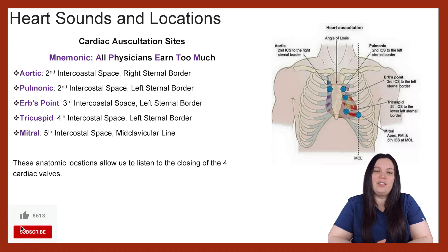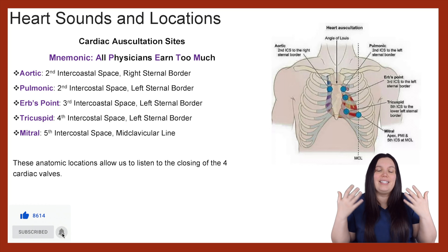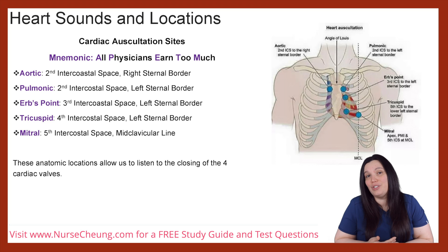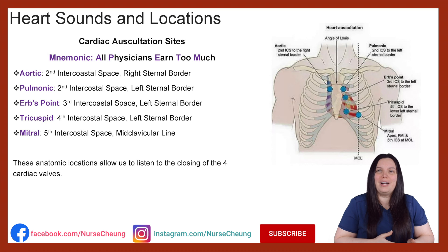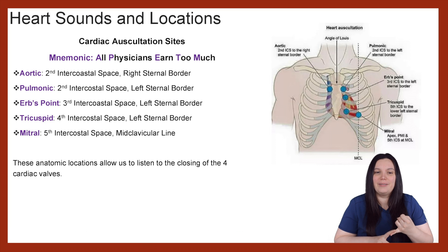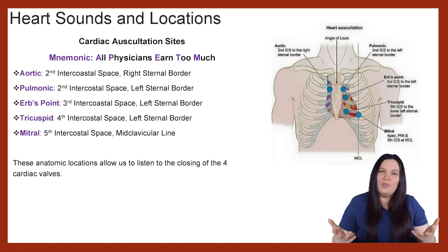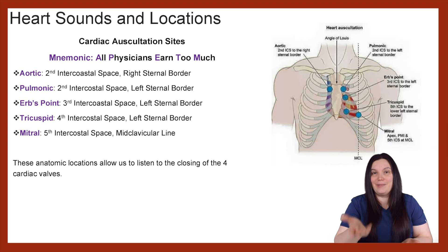Let's begin by looking at our cardiac auscultation sites. It's easy to remember where these sites are by using a mnemonic. When I was in nursing school, I was taught 'All Physicians Earn Too Much.' All = Aorta, Physicians = Pulmonic, Earn = Erb's point, Too = Tricuspid, Much = Mitral. There are other mnemonics like 'All People Enjoy Time Magazine' or 'Ape to Man,' but this is how I remembered it.